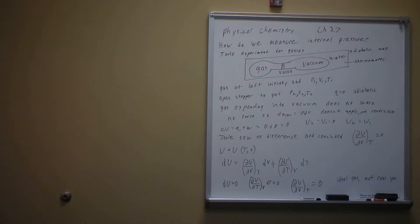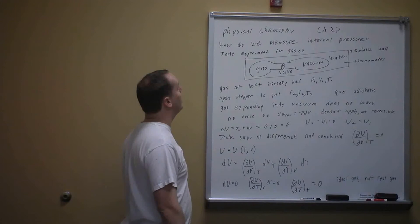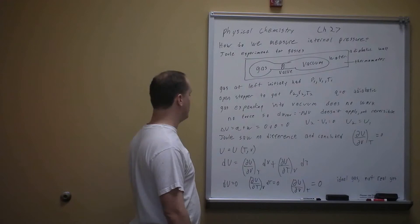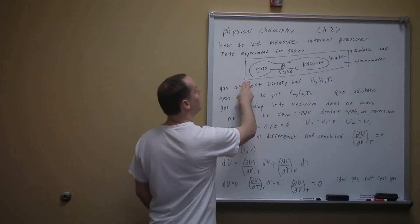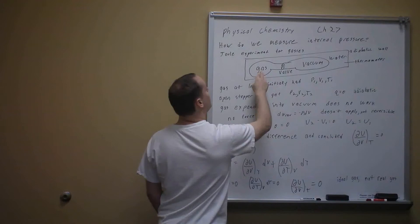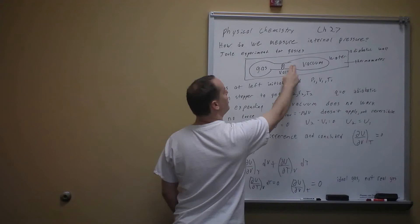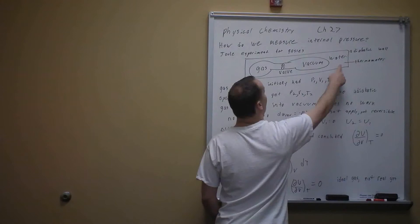Continuing on Chapter 2.7, we talked about internal pressure — it has units of pressure, but how do we measure it? Joule performed an experiment to find it for gases. He used an adiabatic container filled with water, inside of which was a two-part system: on the left, gas only; on the right, a hard vacuum. Between them was a valve, and the temperature of the water was measured with a thermometer.